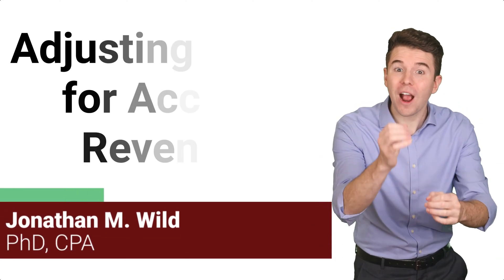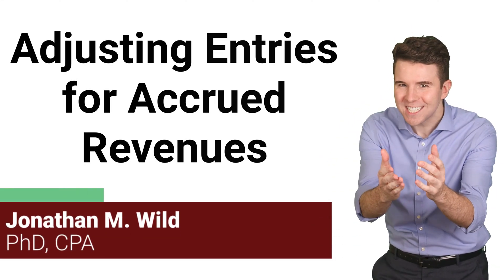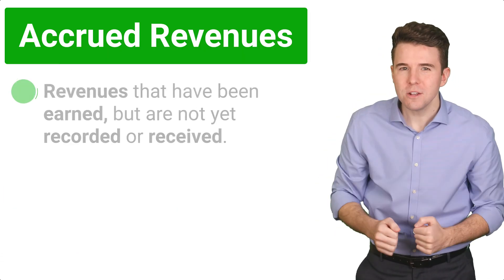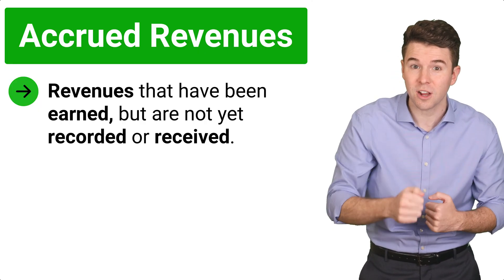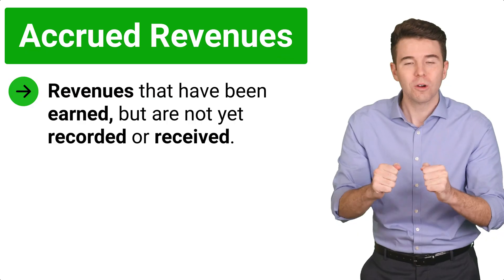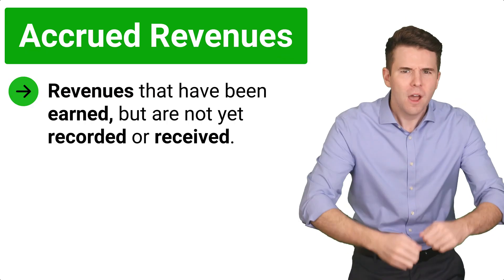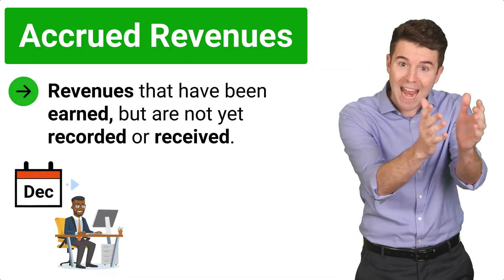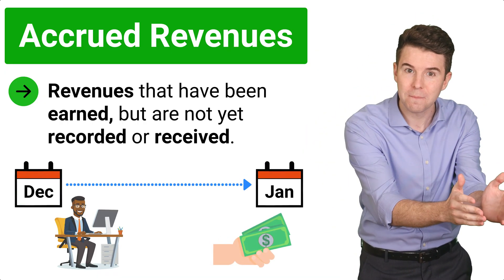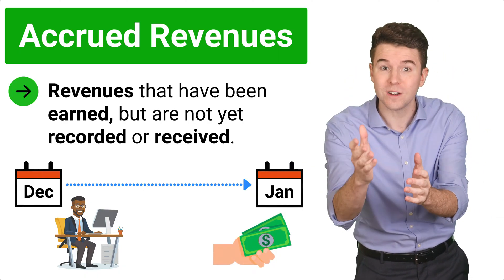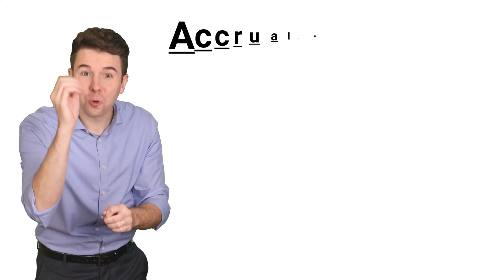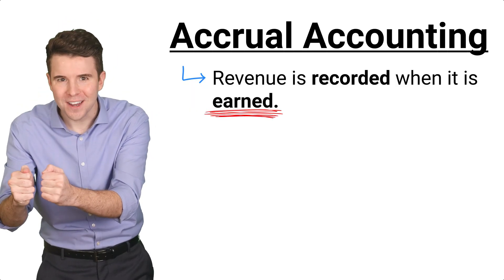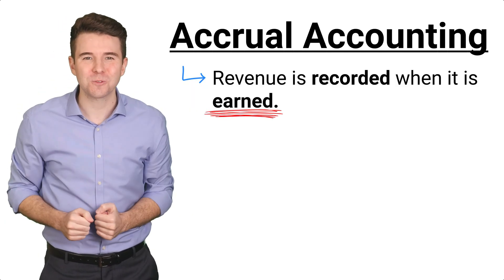Hi, I'm Jonathan Wild, and we cover how to record adjusting entries for accrued revenues. Accrued revenues are revenues that you have earned by providing services to your customers, but not yet recorded or received in cash. For example, maybe you did some consulting work for a client in December, but they will pay you in January. That means you have an accrued revenue for December. Using accrual accounting, we record revenues when they are earned, which might be before cash is received.